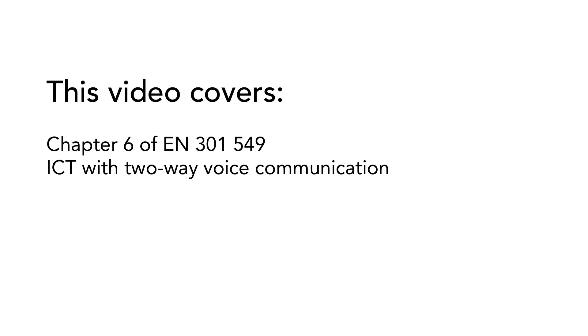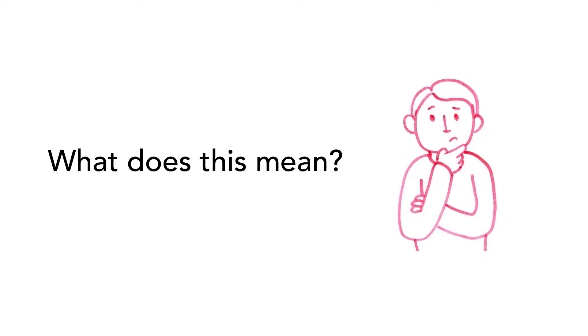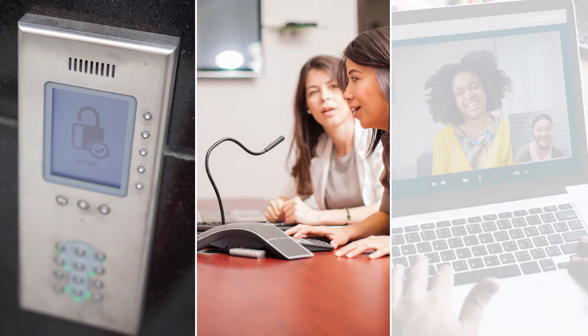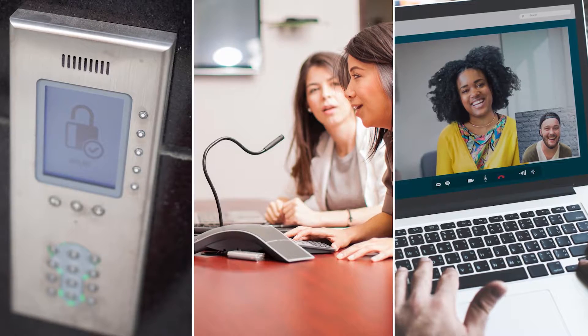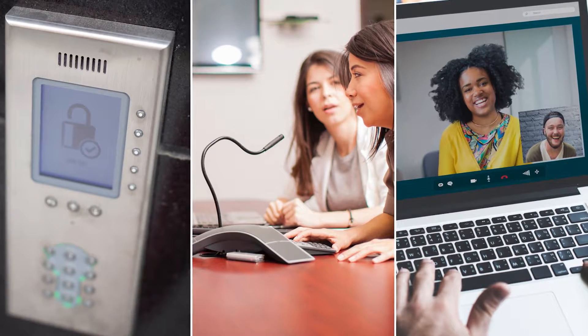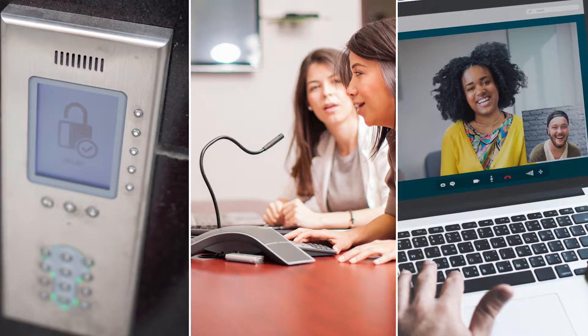In this video, we are going to look into chapter six of the EN standard. This chapter covers ICT with two-way voice communication, which simply means that two or more persons communicate via some sort of ICT using their voices. This could for example be a door entry phone, or when you participate in a digital meeting using a computer or a smartphone. Note that this chapter contains some information on video regarding lip reading and sign language, but chapter seven deals with more general requirements on video.